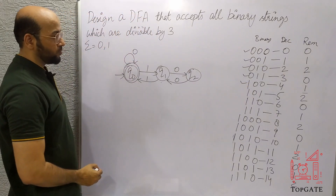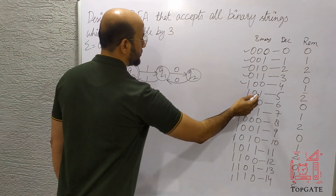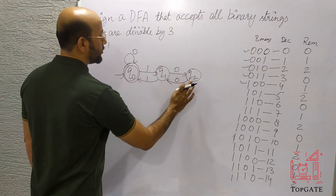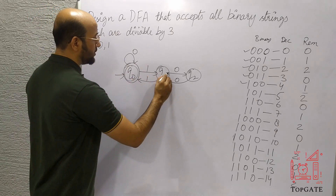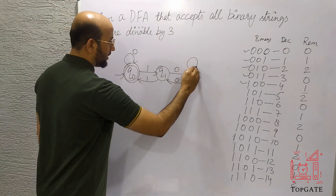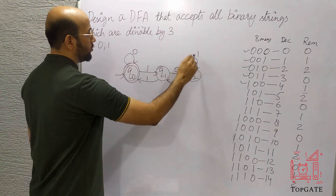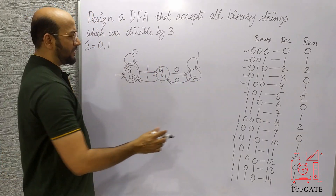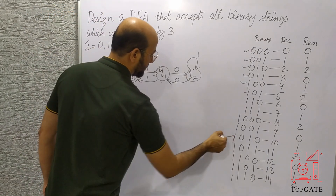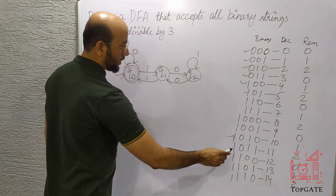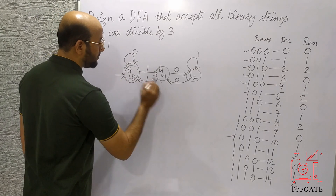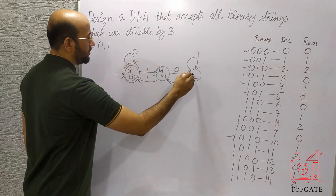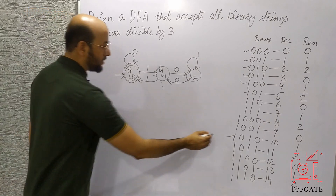This condition is met. Next, 101 in binary is 5 in decimal, and 5 divided by 3 gives remainder 2, so we should land on state q2. From q2, reading 1 we take a self-loop back to q2. So 101 gives decimal 5 and we are on state q2 where the remainder is 2. Let's verify: 1010 in binary is 10 in decimal, and 10 divided by 3 gives remainder 1, so we should come to q1. Tracing 1, 0, 1, 0 — we arrive at state q1. Correct.